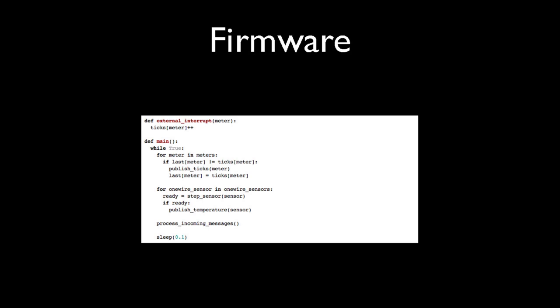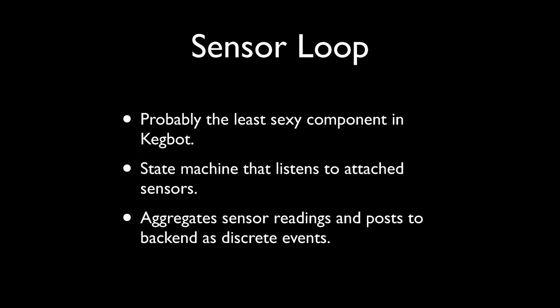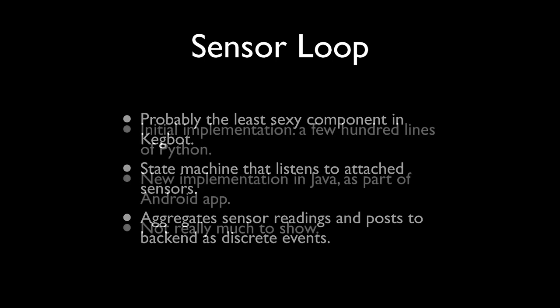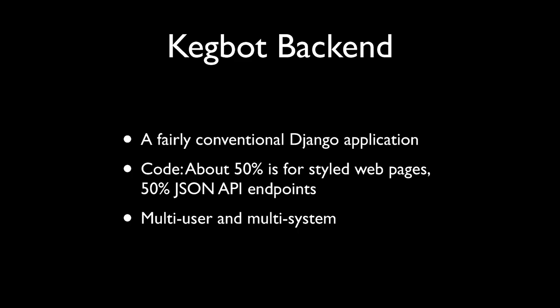The firmware is pretty simple — we just wait for information from the flow sensors, periodically check the temperature sensors, and send it up to whoever's listening. For the sensor loop, initially I implemented this as a Python program. When you built a Kegbot, you'd get a Linux box, plug in the USB board, run a command-line program, and hide the box behind your fridge. Today this all happens inside an Android app, using the USB host features of Android, with the USB port plugged directly into Android.